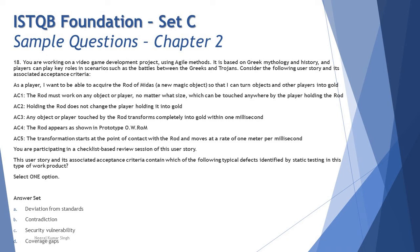Reading through the entire story, I find one particular contradiction between AC3 and AC5. AC3 says any object or player touched by the rod transforms completely into gold within one millisecond — no matter how big the object is. AC5 says the transformation moves at a rate of one meter per millisecond. These two are directly contradicting each other, which is the finding identified during the static review.